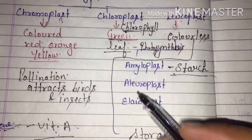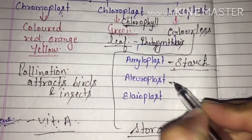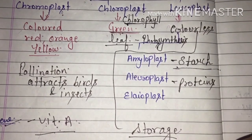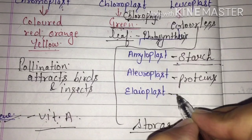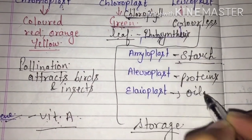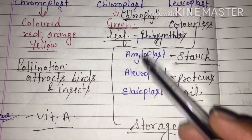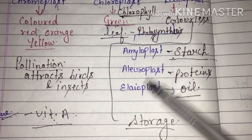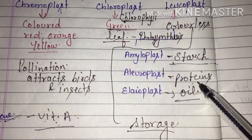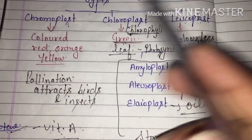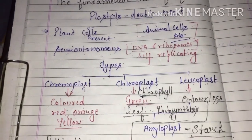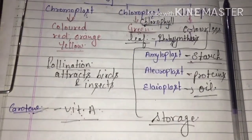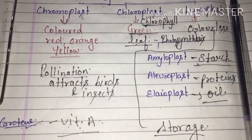These are colorless plastids. Aleuroplast helps in the storage of proteins, storing proteins inside them. Another type stores oil. So starch, proteins, and oil are all stored by leucoplast — the three types being amyloplast which stores starch, aleuroplast that stores proteins, and elaioplast that stores oil. This was our today's topic on plastids. Our next topic will be lysosomes, which we will discuss in the next video.